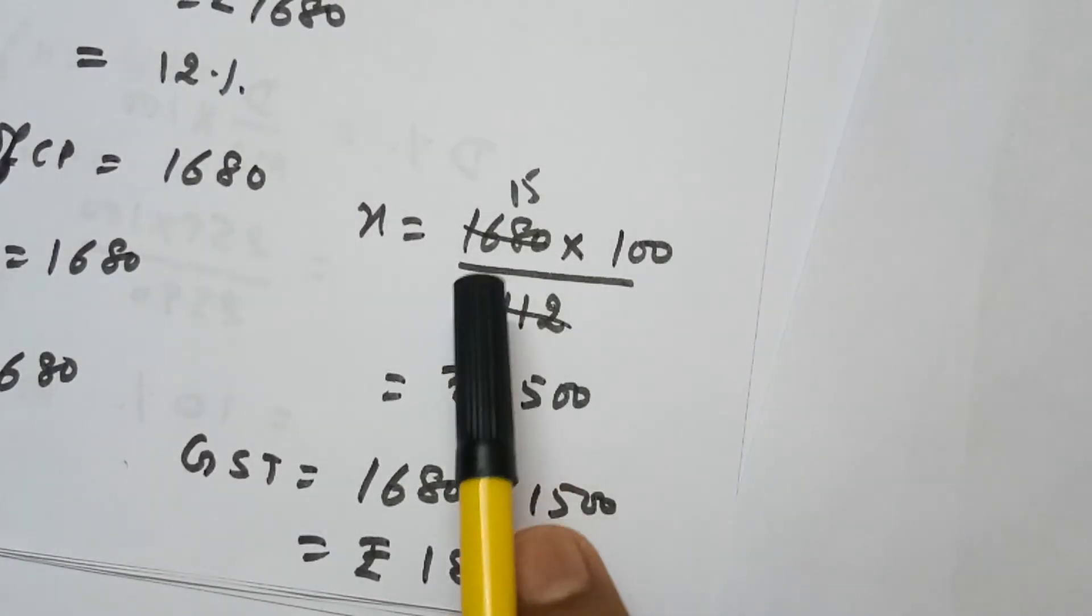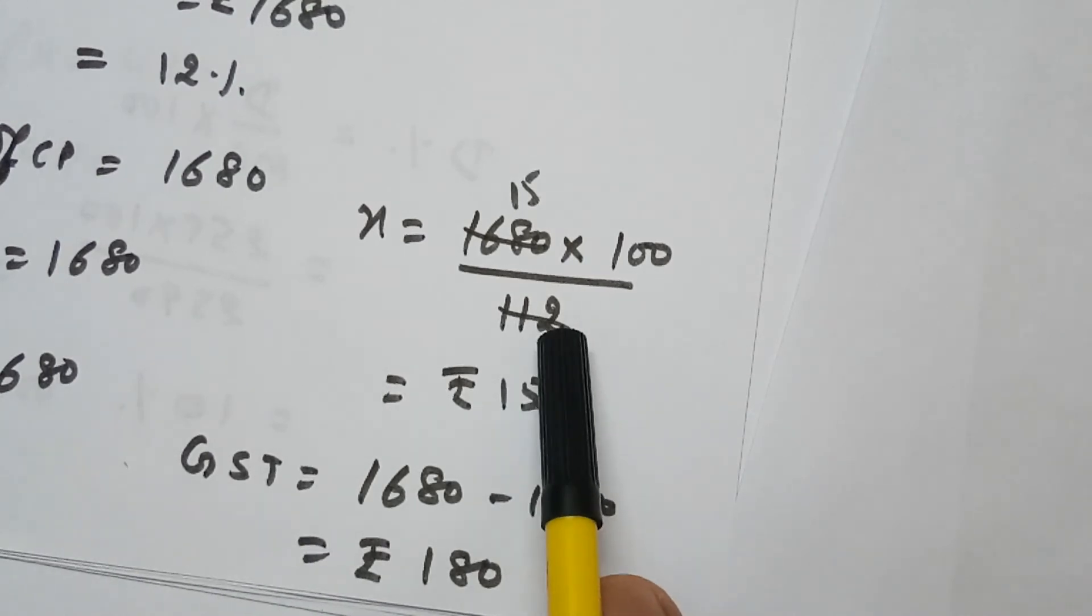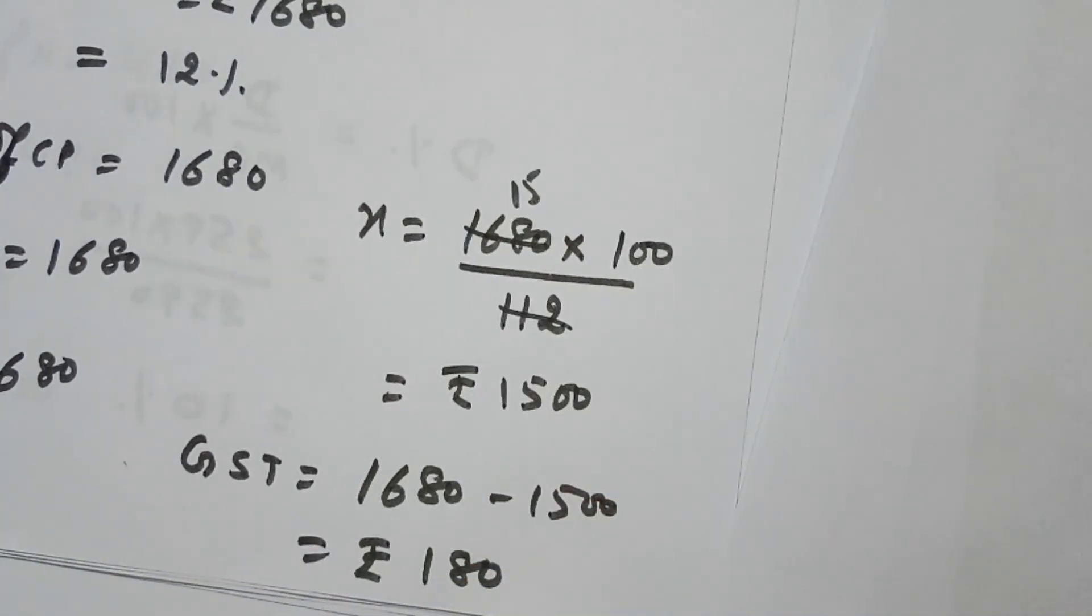So this becomes X equals 1680 into 100 over 112. 112 into 15 is 1680 and 15 into 100 is 1500.